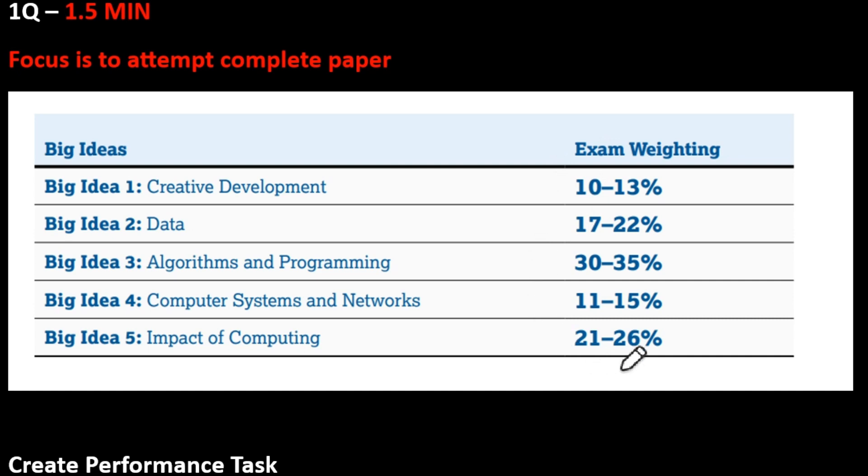So according to the weightage, you should prepare accordingly. There are some theoretical topics like Impact of Computing, Creative Development has some problem solving but overall it's a theory topic. Computer System Networks is also very theoretical. According to my experience, I have seen that students don't have much problems with theoretical topics like Impact of Computing, Computer System Networks, and Creative Development. They have issues with these two things: Data and Algorithm and Programming. So these two big ideas are the two most important things you will focus for exam.